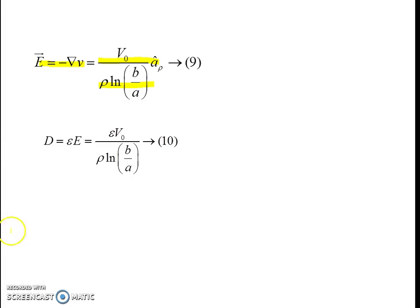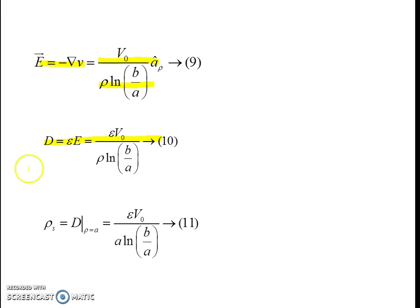From the electric field we obtain the electric flux density D = epsilon * E, so D = epsilon * V0 / (rho * log(b/a)), taking only the magnitude. The surface charge density on the inner conductor is obtained by substituting rho = a into the expression for electric flux density, giving rho_s = epsilon * V0 / (a * log(b/a)).